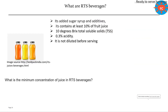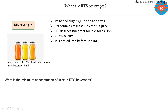The second part covers the production process of RTS beverages. As per the specifications, RTS beverages must contain at least 10% fruit content of the juice. The final Brix requirement is a minimum of 10 degrees and acidity of 0.3%. It is not required to dilute before serving — they are ready-to-serve beverages.